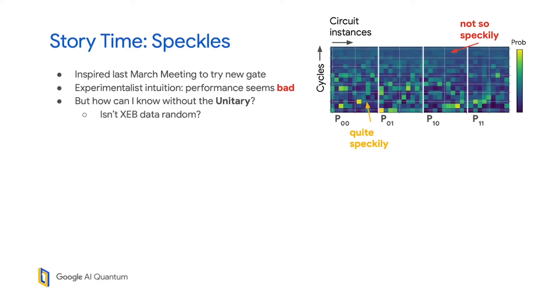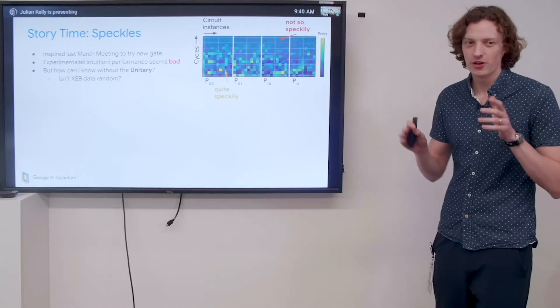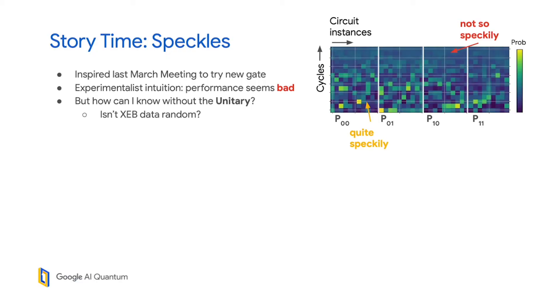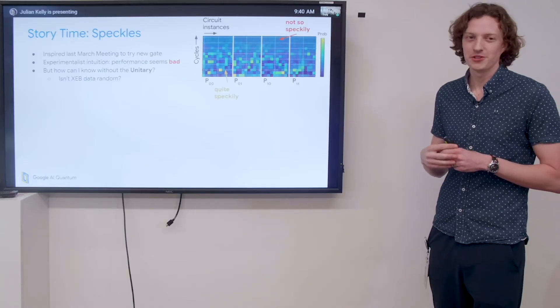I'm going to tell a little bit of a story. Last March meeting, I was sitting in some sessions and was inspired to try some new type of gate. I decided to run back to my hotel room, code it up, remote in, and get things running. I took this data, and my experimentalist intuition started tingling. I was thinking that the performance of this gate seems really bad.